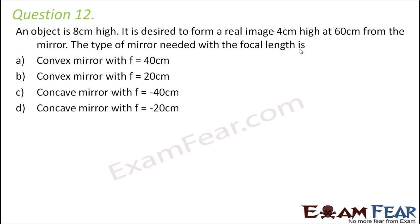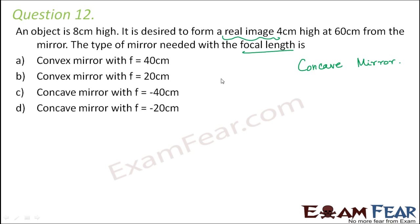To understand the question — we have to form a real image with this mirror. A real image is possible only with a concave mirror, because a convex mirror always gives virtual, erect, diminished images. Here we want a real image, so the type of mirror will definitely be a concave mirror. Now we have to find the focal length.